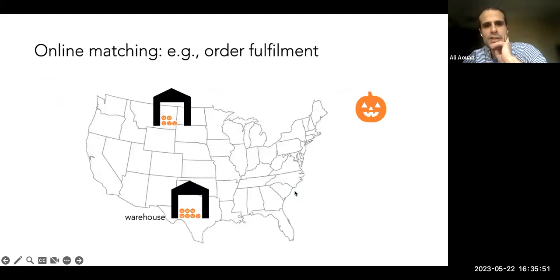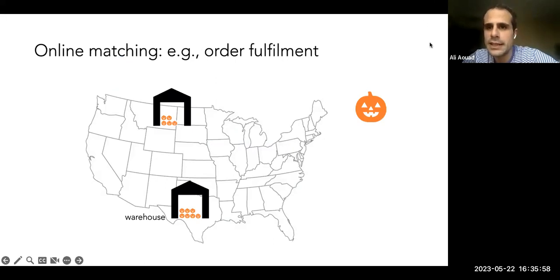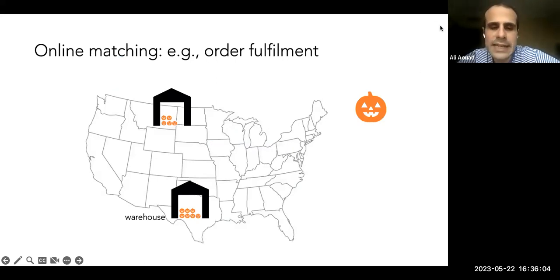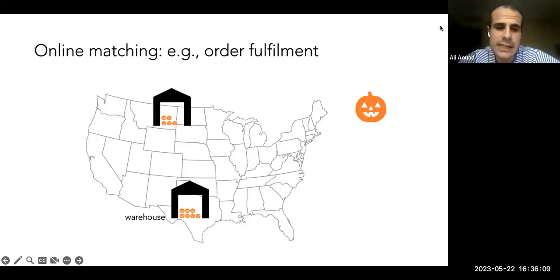Let me jump into the problem of interest: the decision problem called online matching. I'll use order fulfillment as an example — a problem retail platforms face. Suppose I have an inventory of pumpkins across a network, meaning I have different warehouses where I stock inventory.